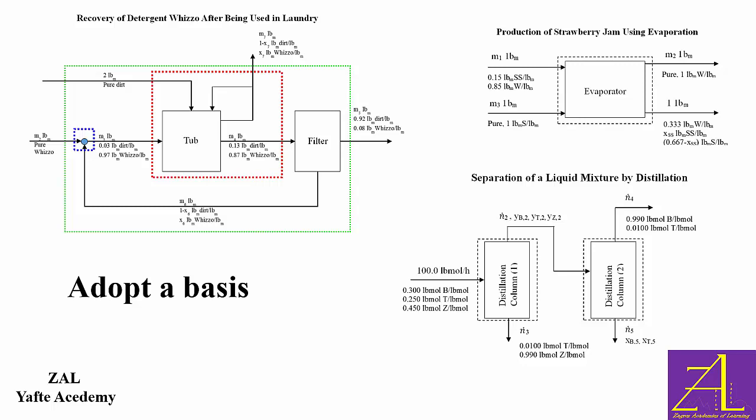Once the basis is adopted, the unknown stream flow amounts or rates are assumed in accordance with the units of the basis. In the distillation problem, they are all in pound mole per hour, while in the laundry problem, they are all in pound mass. In the main flowchart, all labels are shown and detailed.